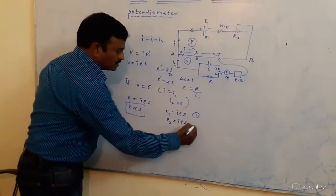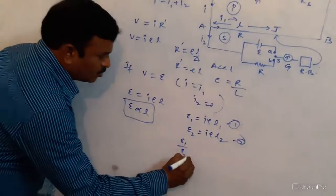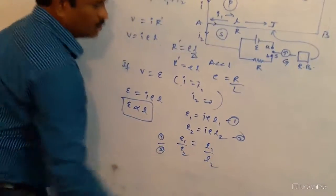Then, I ρ L2. It is equation 2. So, E1 by E2 from equation 1 and 2, E1 by E2 is equal to L1 by L2.